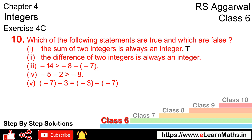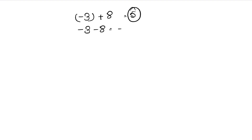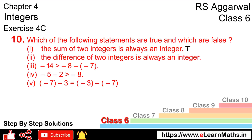Let's do the second part. The second part is: the difference of two integers is always an integer. If we subtract an integer from another integer, the result will also be an integer — for example, the result is minus 11, which is an integer. Hence, the second statement is also true.